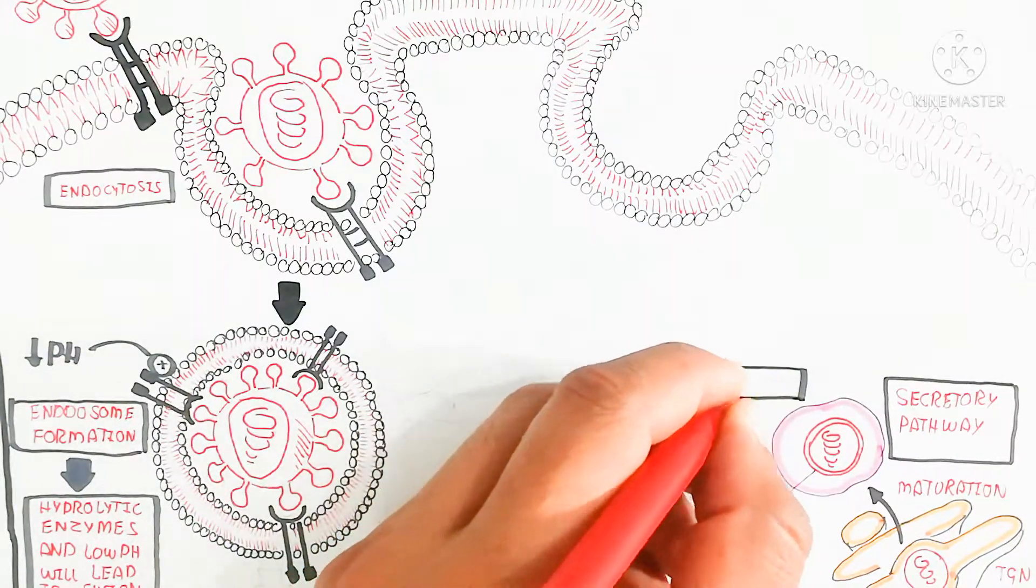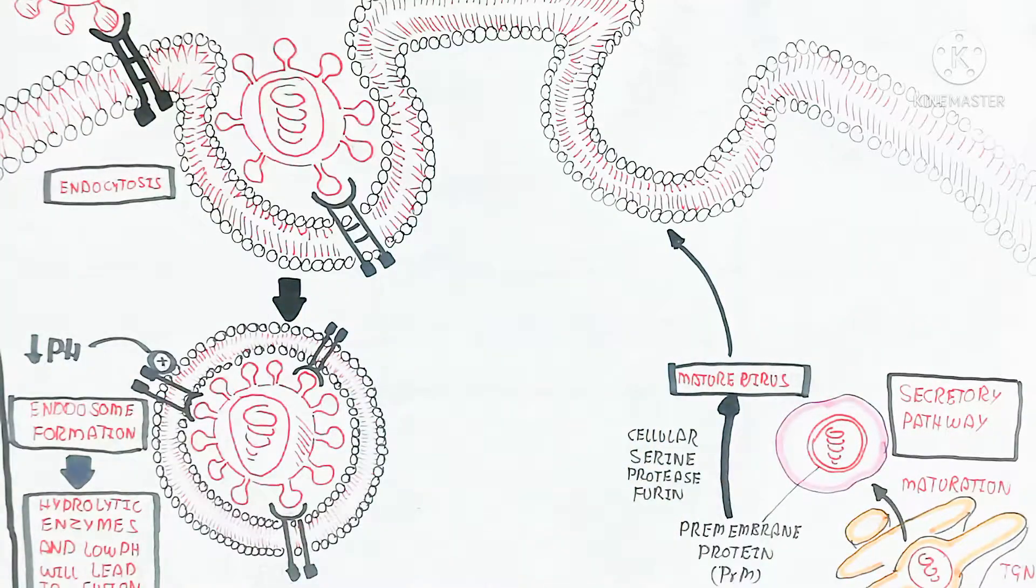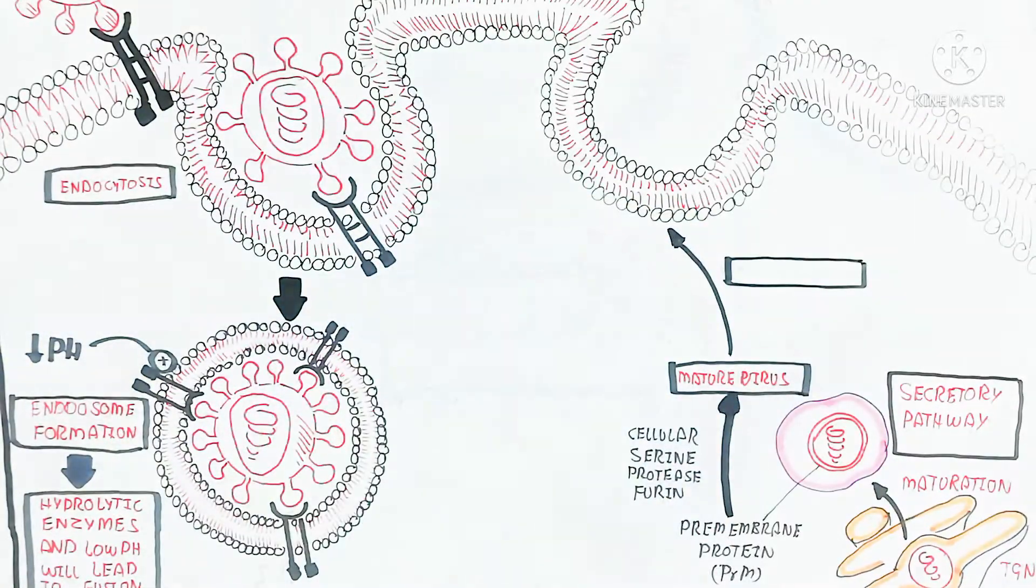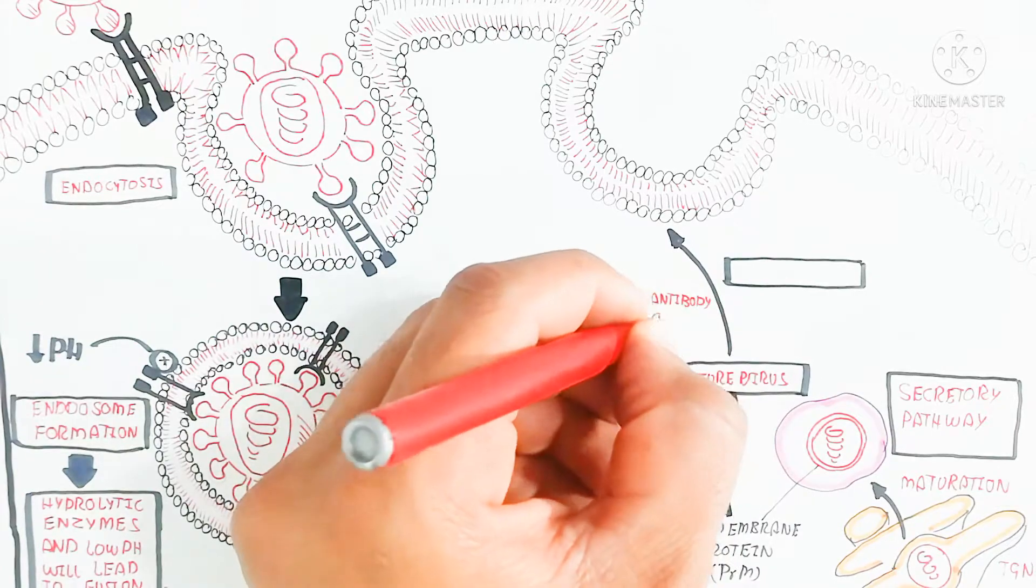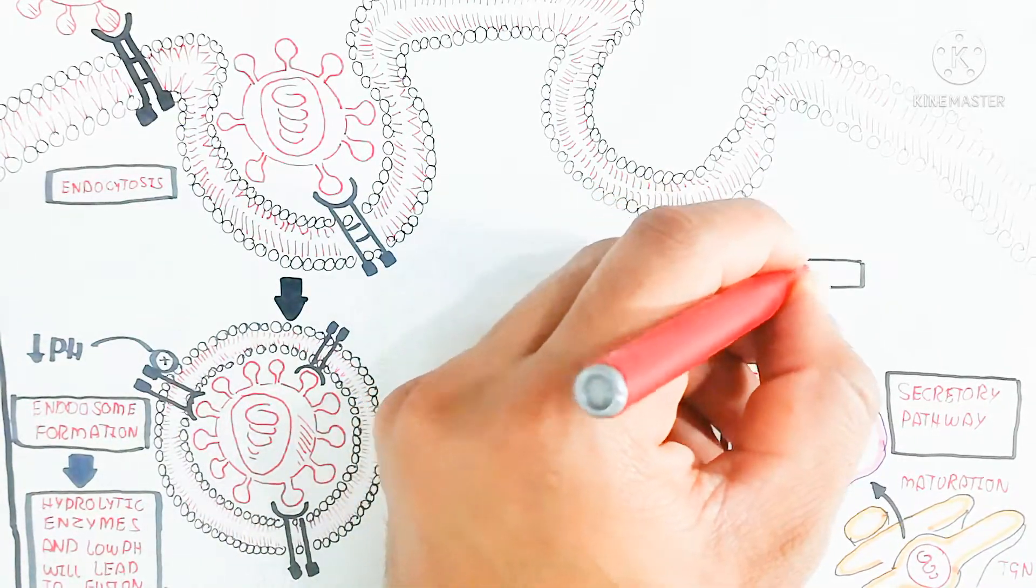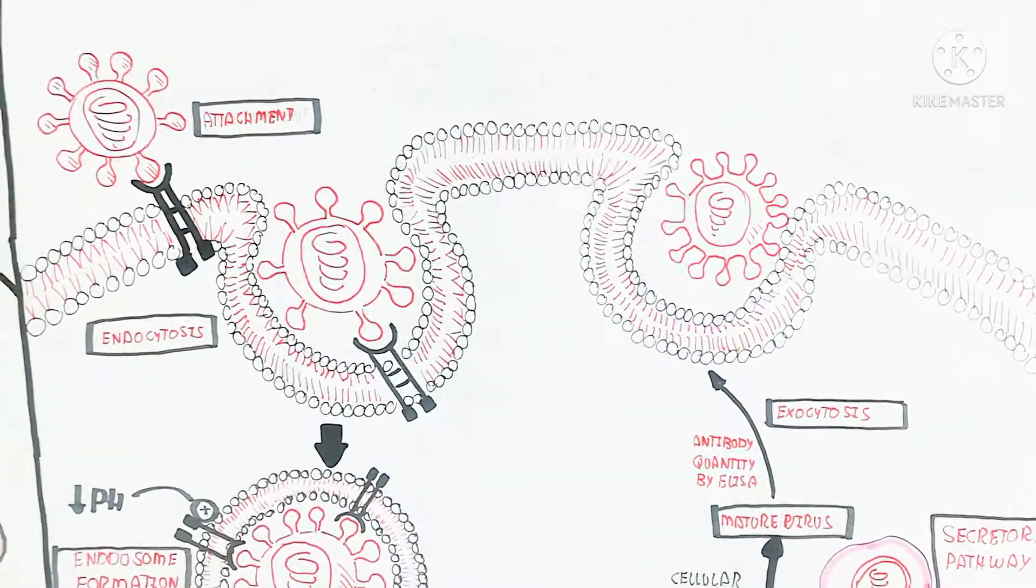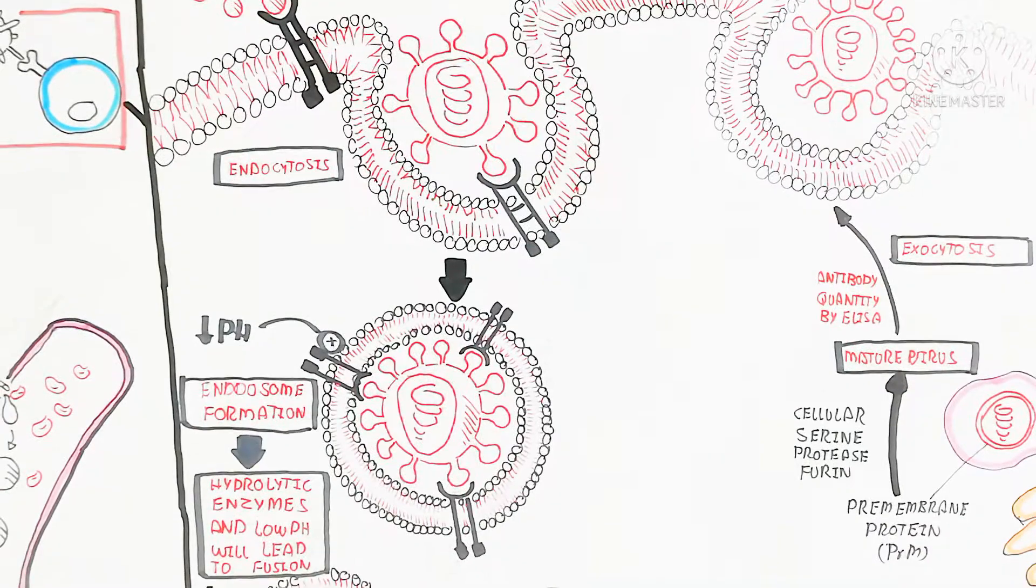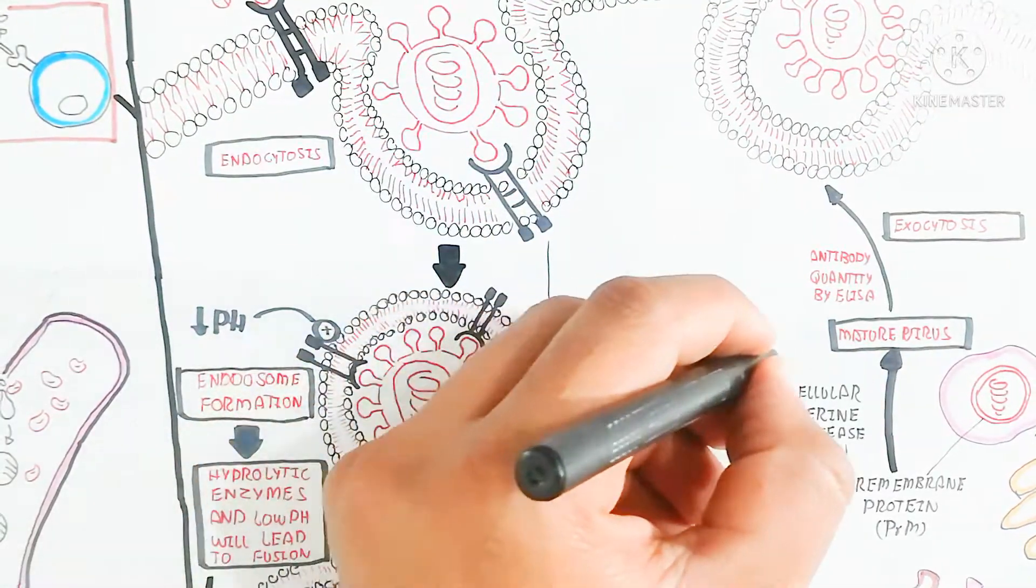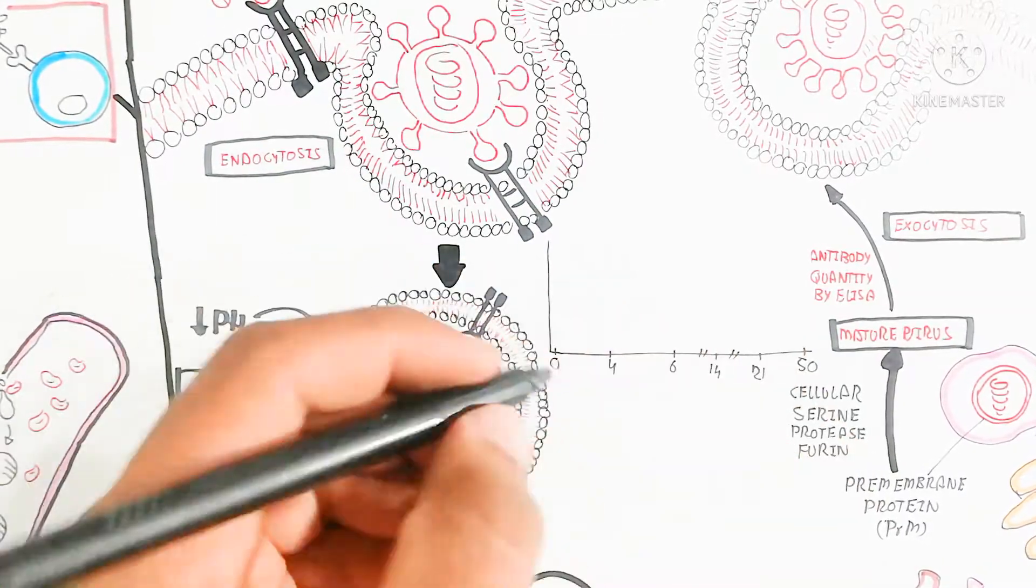The mature virus is formed. Exocytosis occurs. After exocytosis, you can identify the illness of the virus infection.